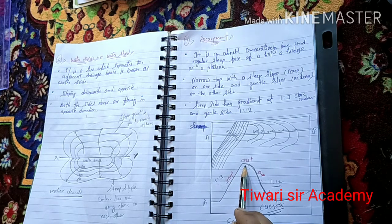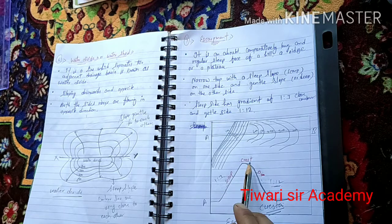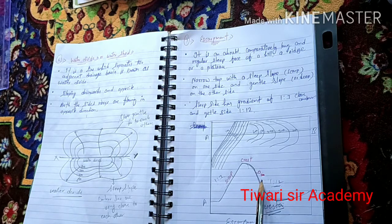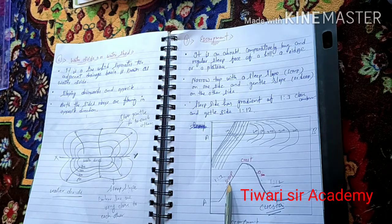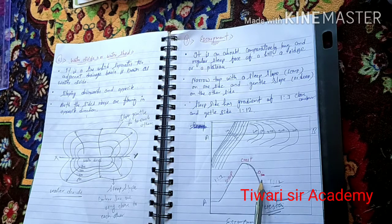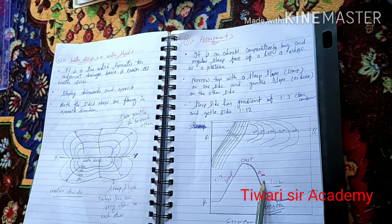The top of this landform is called the crest. On one side it is called the scarpe and on the other side it is called the deep. The scarpe side has a very steep slope, and the deep side has a very gradual slope.